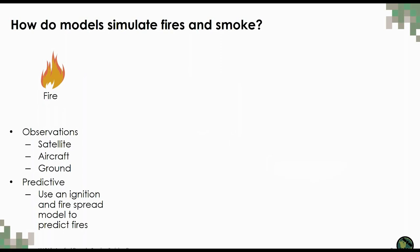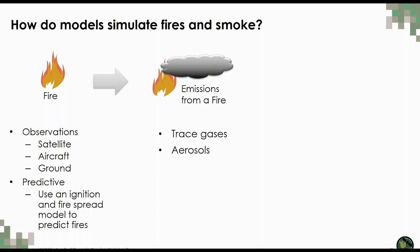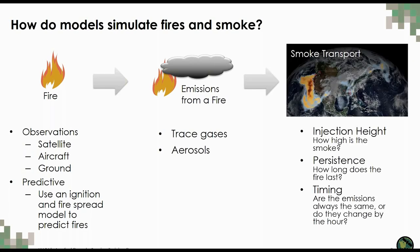How are emissions from fires calculated, and how do models simulate fire and smoke? First, there has to be a fire. We know from session three that satellites and other instruments can detect active fires. But what about periods in the past when there were no satellites, or further into the future? For those scenarios, specialized fire prediction models use parameterizations to predict the occurrence and spread of fire. For this presentation, we're going to focus on calculating emissions from fires observed by satellites. Emissions from a fire consist of a combination of trace gases and aerosols.